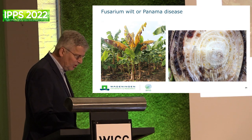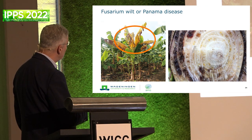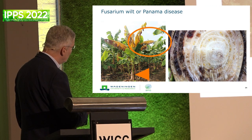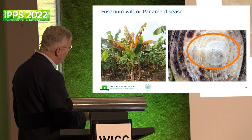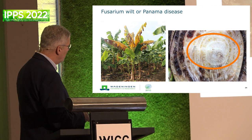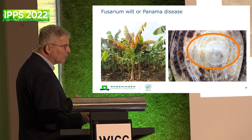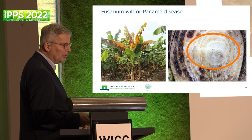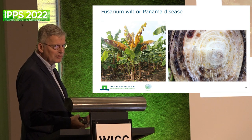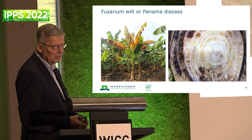Panama disease - on the left that's the symptom: severe wilting, leaves become chlorotic, eventually die. If you cut the stem, this is what you see - totally colonized and occluded by Fusarium biomass. As a response of the plant, galls are also produced that really occlude the vascular system - that's why wilting occurs. In this process, the fungus produces an enormous amount of spores, including resting spores that are in the soil. So once you have this disease, you just cannot come back for the coming 20 years.